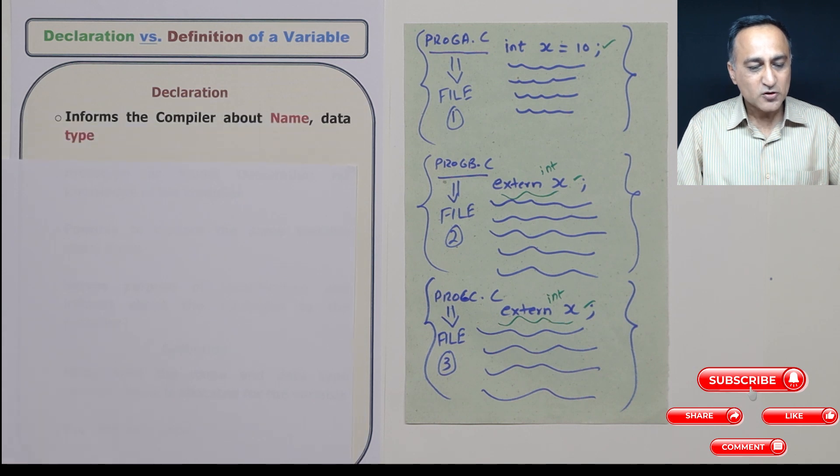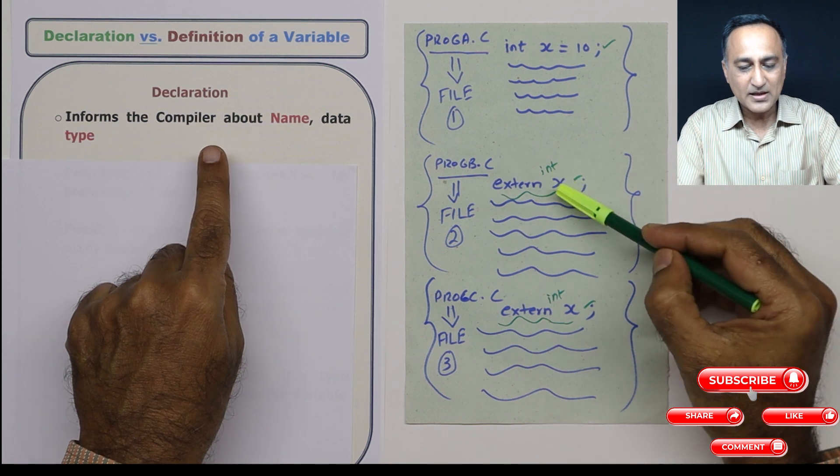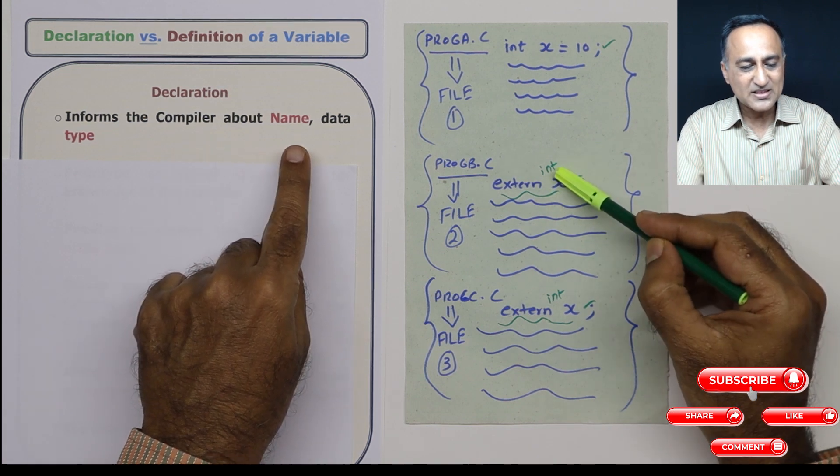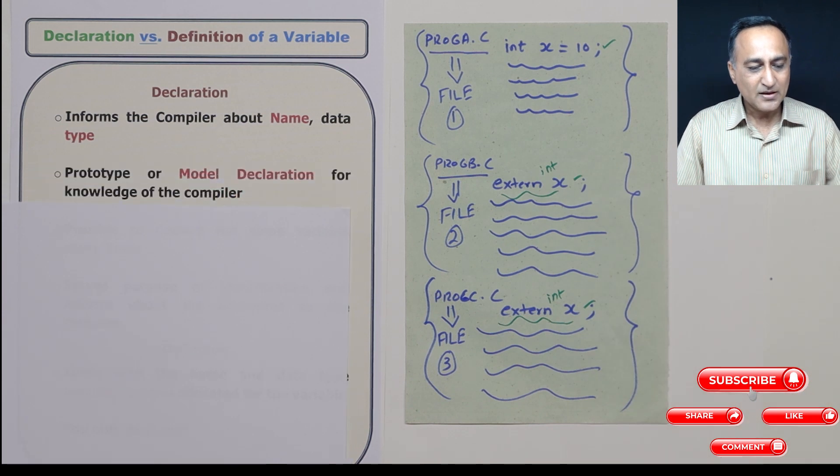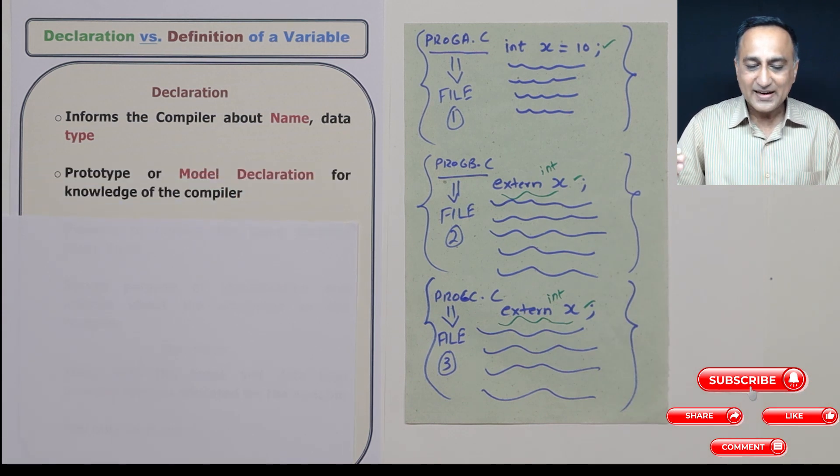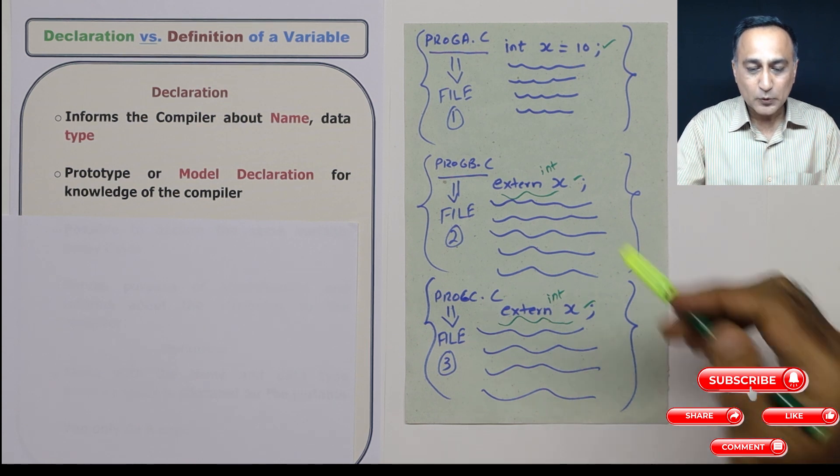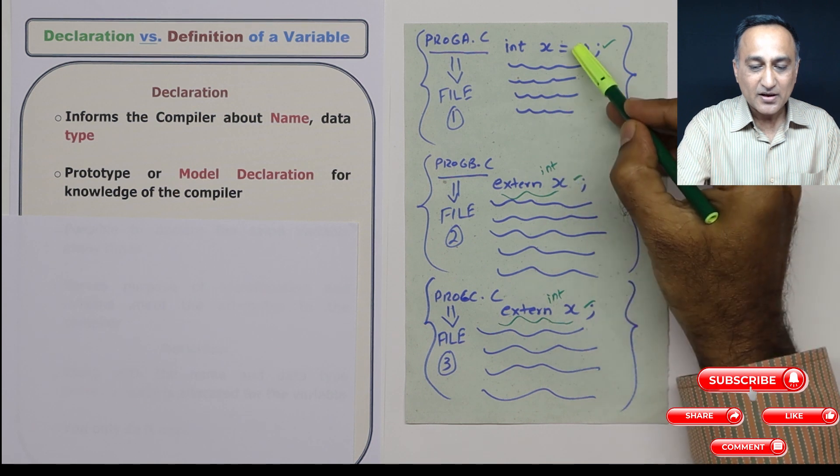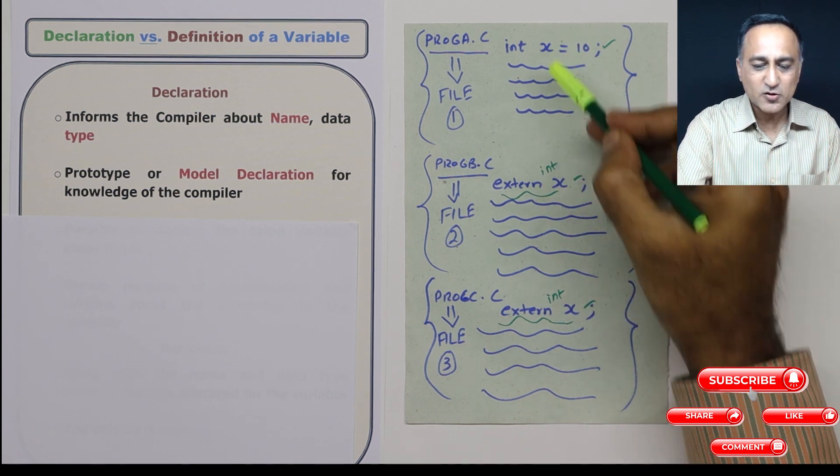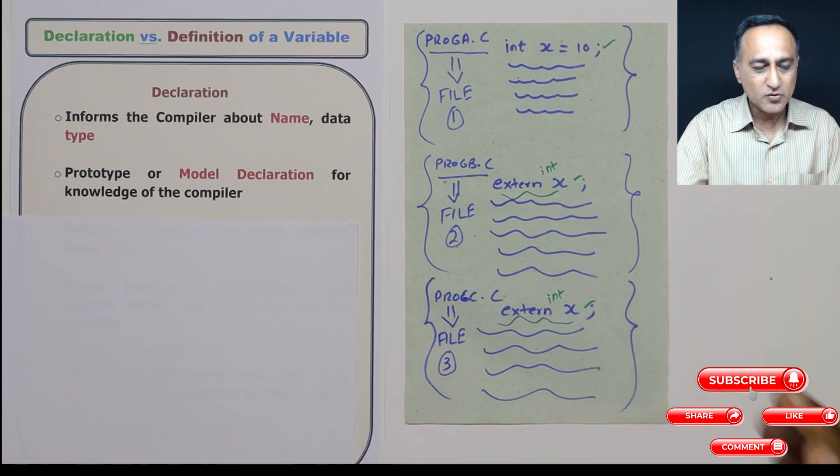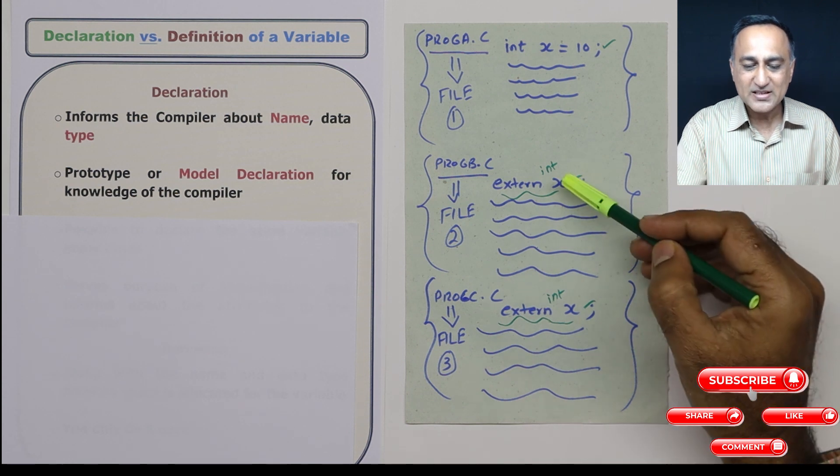So let's look at declaration. The job of declaration is to inform the compiler about the name - name is x, data type is integer. That's what this declaration is doing. What does this declaration involve? Declaration is showing the model or the prototype of this particular x which is being used here. So this is just the model of this actual x which is going to be used here. So the model declaration is required for the compiler to process x.